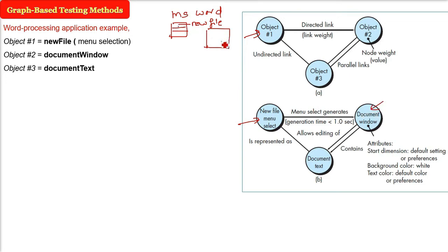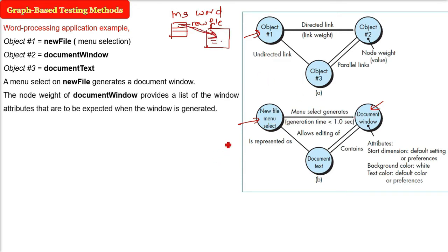When you press new, a document window will come. Now you are going to write something in the document text. So this will be object 3. Now the first one, new file menu select. Now menu will generate a document window. So it can be only one directional. Document window will not generate the menu select. You cannot go other way around.